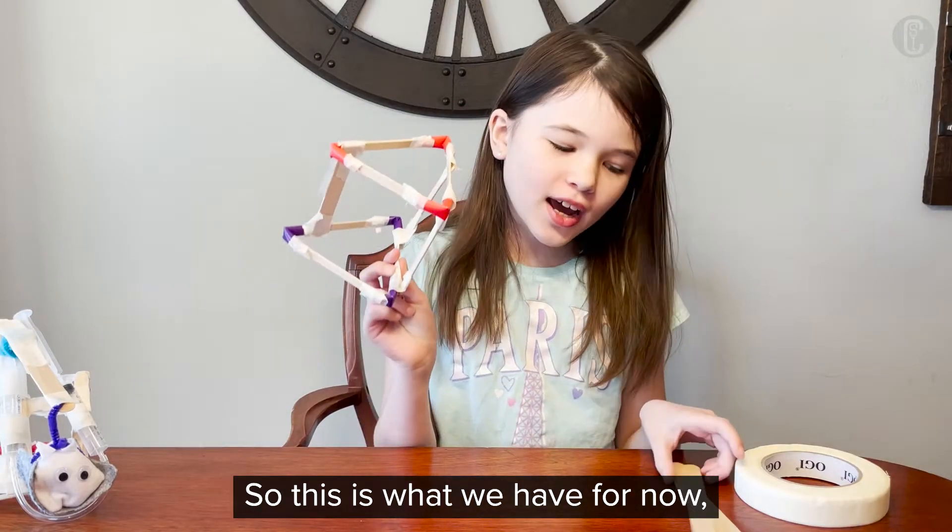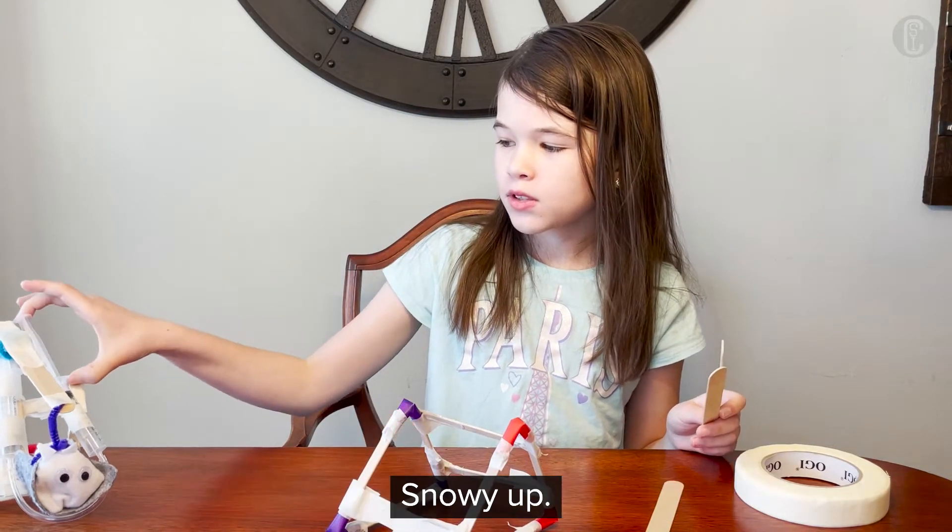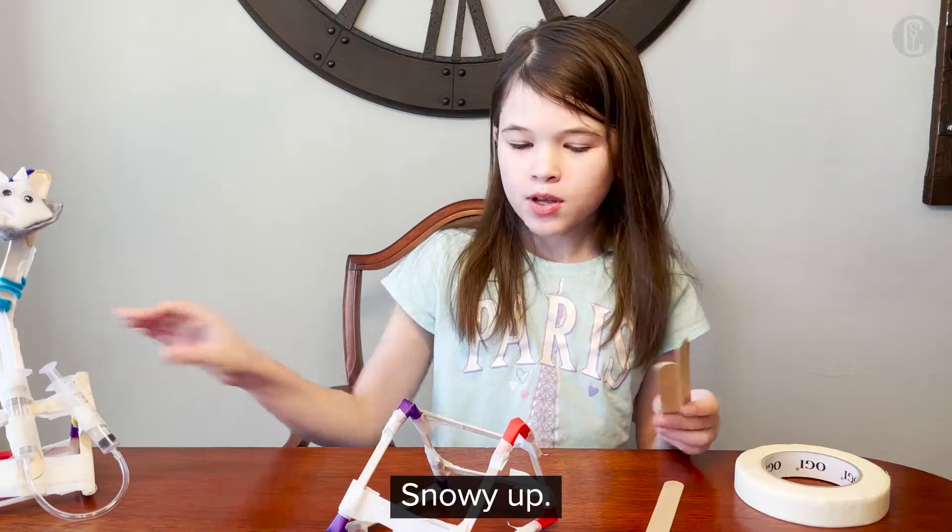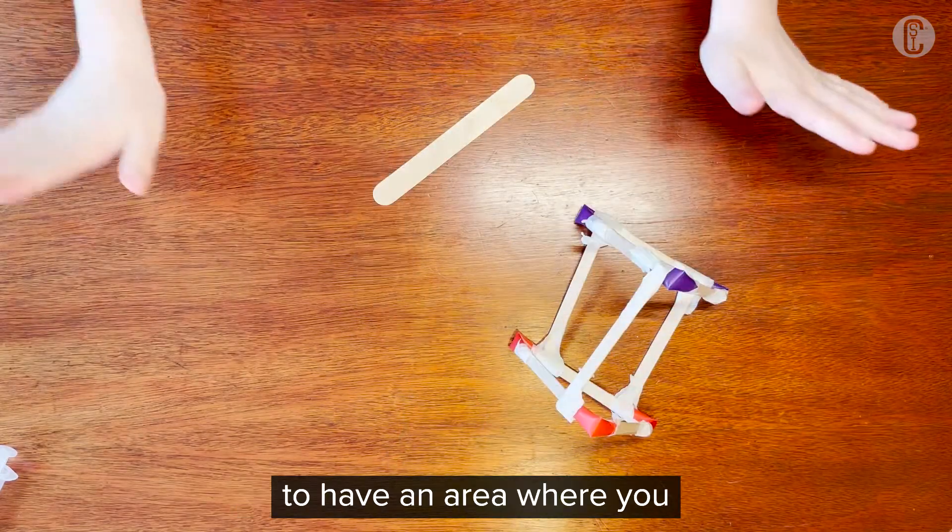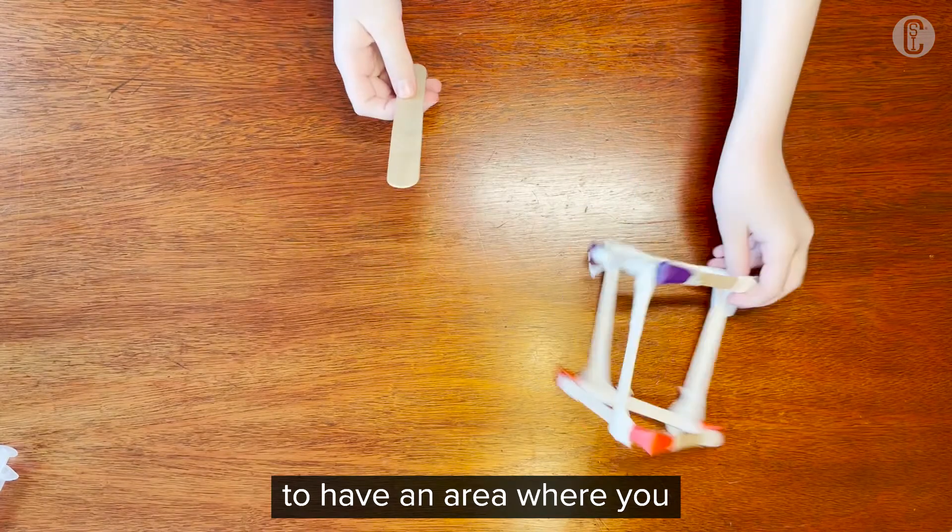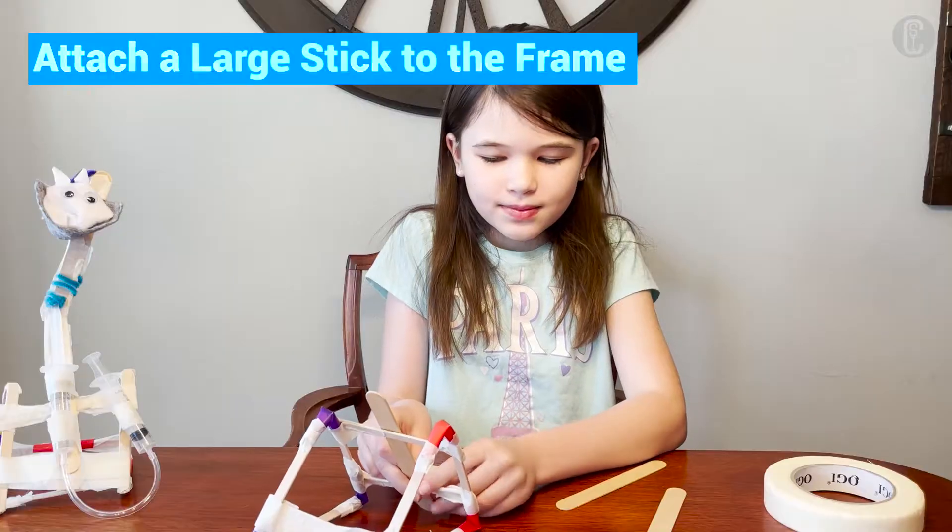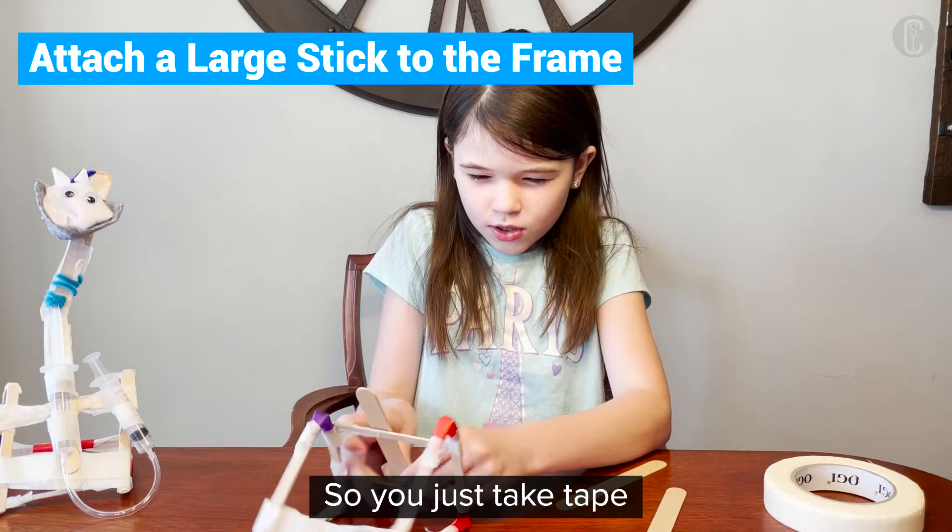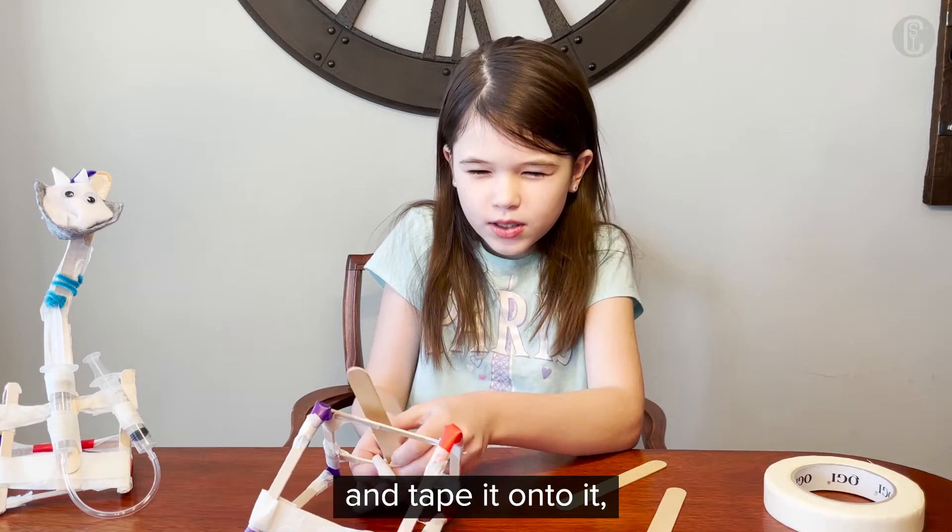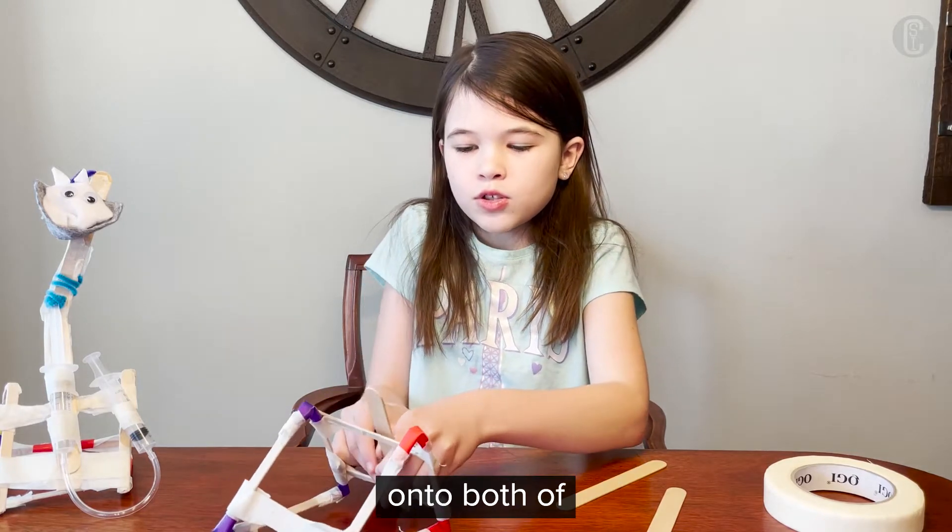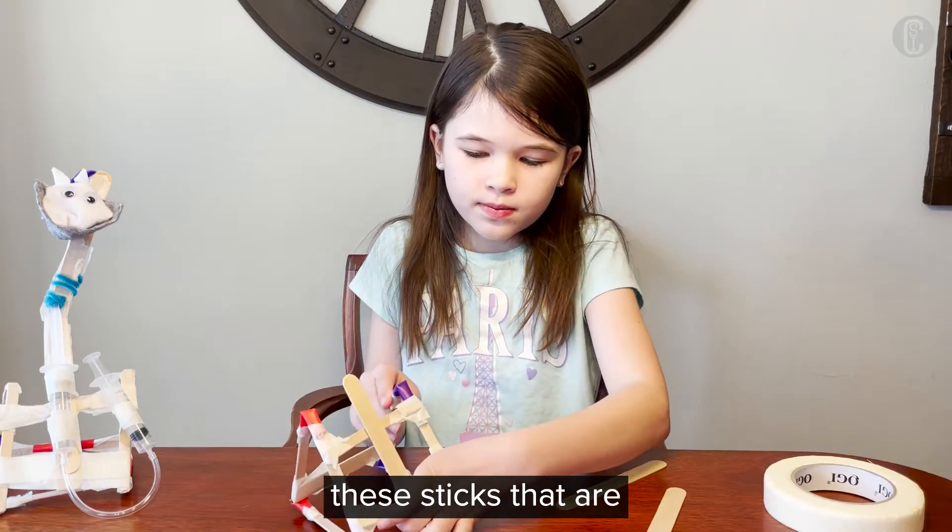So this is what I have for now, but we need to add the part that moves Snowy up. So next you'll need a big stick to have an area where you can put your pneumatic machine. So you just tape, tape, and tape it onto both of these sticks.